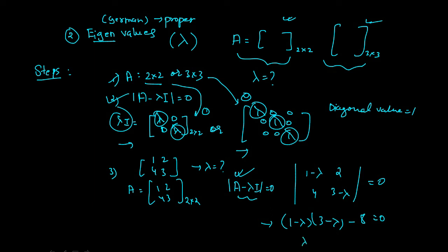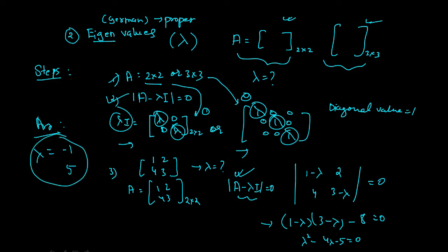If you solve that calculation, the equation is lambda squared minus 4 lambda minus 5 equals 0. Solving that gives lambda = −1 and lambda = 5. So this is how you find the eigenvalues.